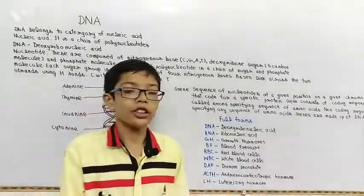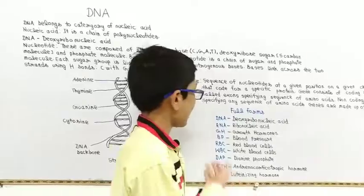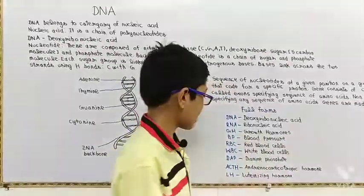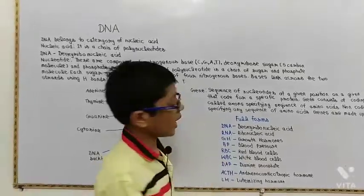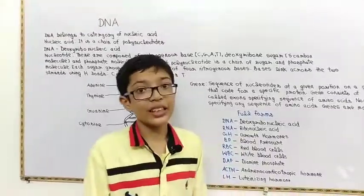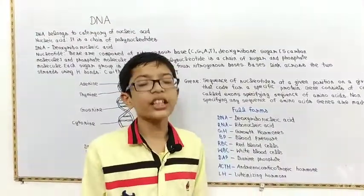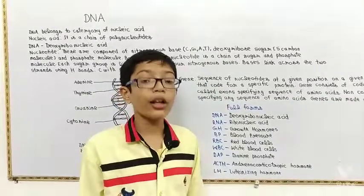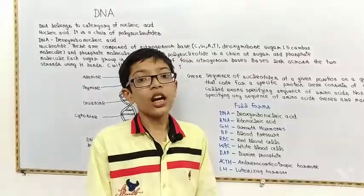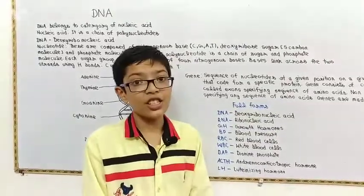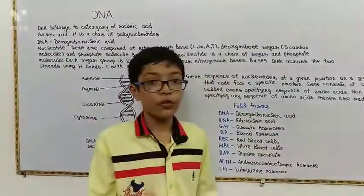And now friends, we study about some biological full forms like DNA, RNA, BP, RBC, and etc. So full forms of DNA: deoxyribonucleic acid. RNA: ribonucleic acid. GH: growth hormone. BP: blood pressure. RBC: red blood cells. WBC: white blood cells. And ATP: adenosine triphosphate.